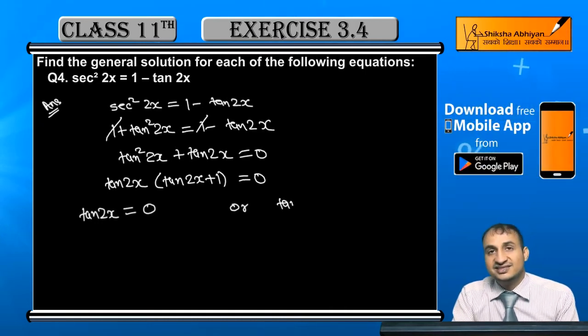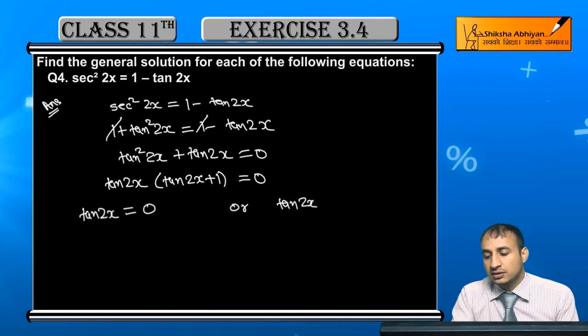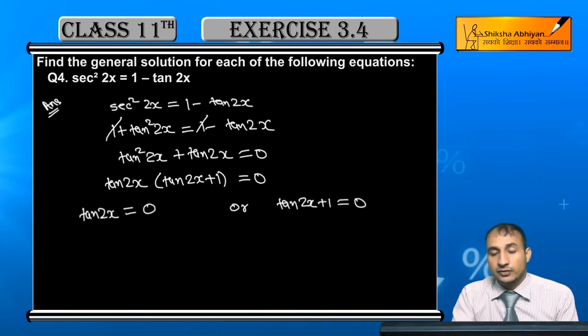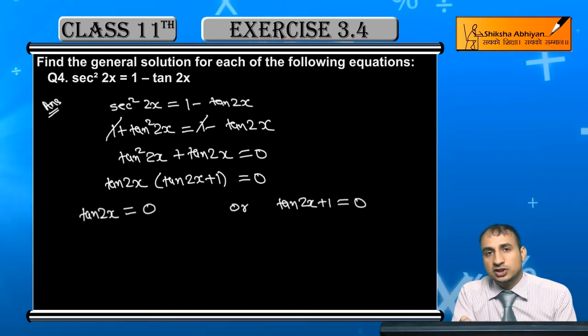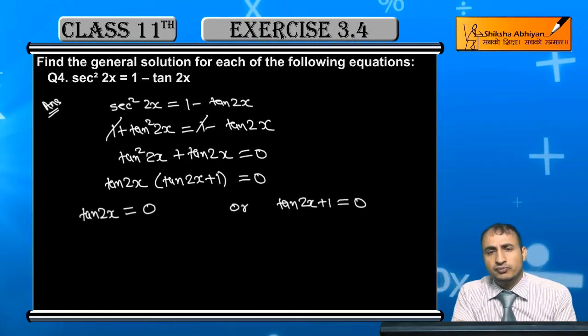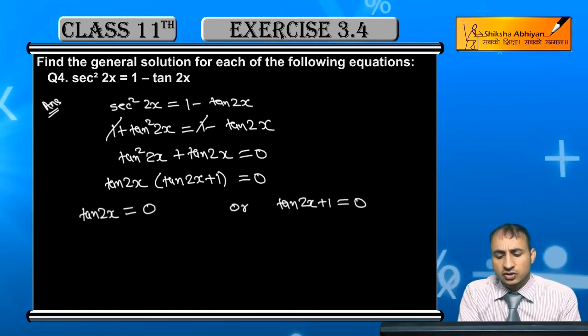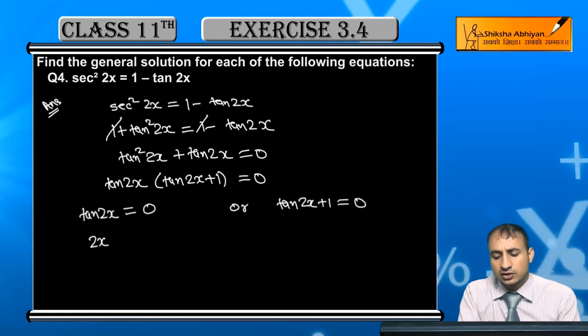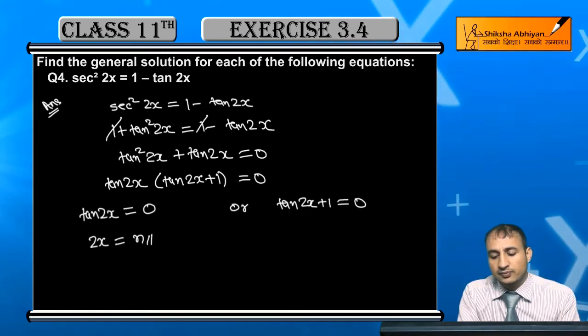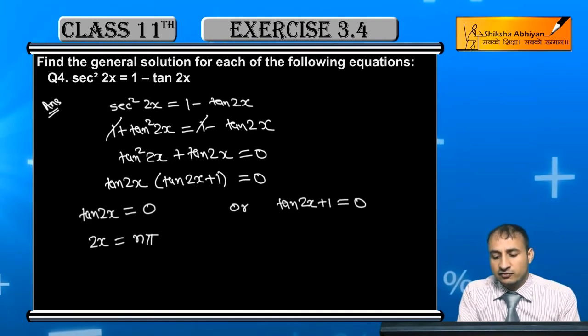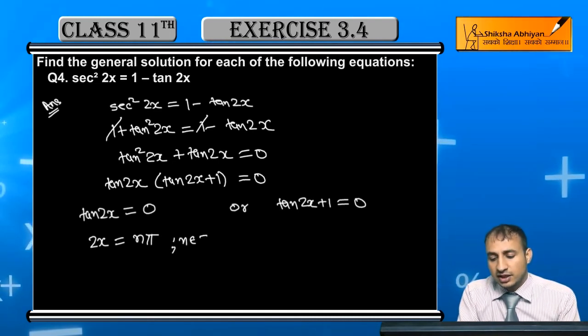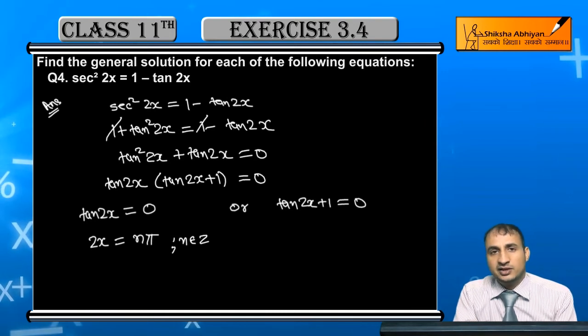Or tan2x + 1 = 0. Now when tan2x = 0, for tan2x to equal 0, what will happen? 2x = nπ.